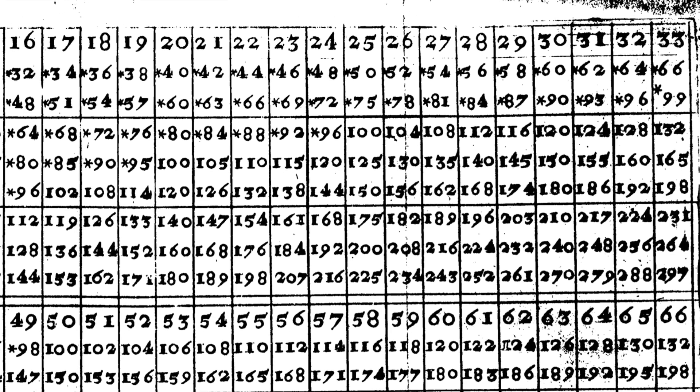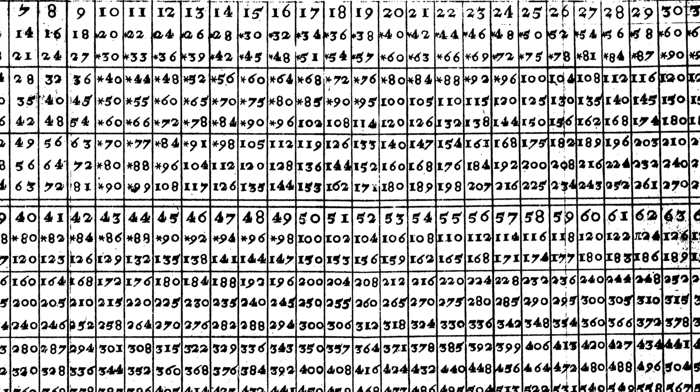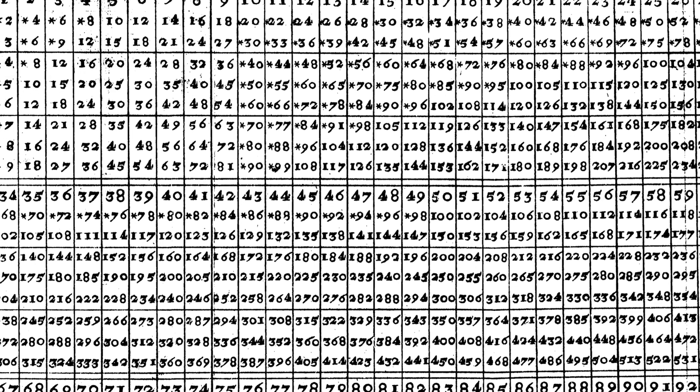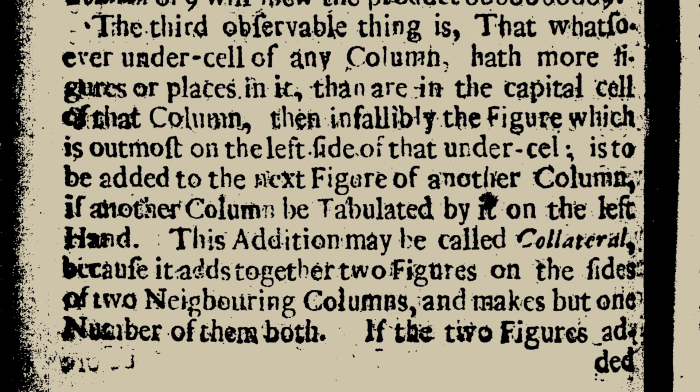Okay, star 75 instead of 075 is not a big deal. But then in the book, he has to explain what the stars mean. And he does it in the most confusing way possible. Whatsoever undersell of any column hath more figures or places in it than are in the capital cell of that column, then infallibly the figure which is outmost on the left side of that undersell is to be added to the next figure of another column, if another column be tabulated by it on the left hand. What? This is all just so much easier if you put a 0 there.